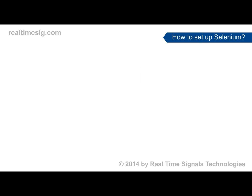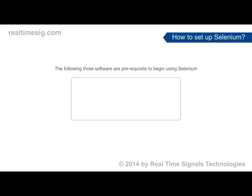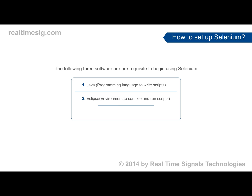Now let us see how to set up the Selenium software on our laptops or desktop. The following three software are the prerequisites: first you need Java, a programming language used for writing scripts; then we need the Eclipse environment used for compiling and running the scripts; and finally you need Selenium, a framework used for testing the application.